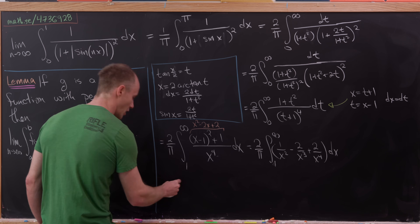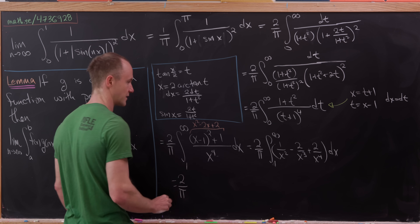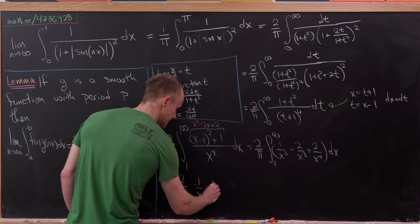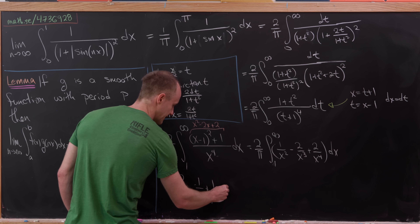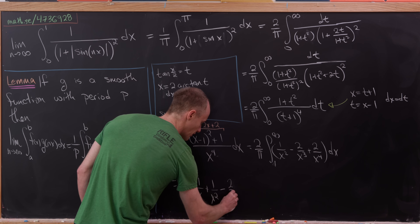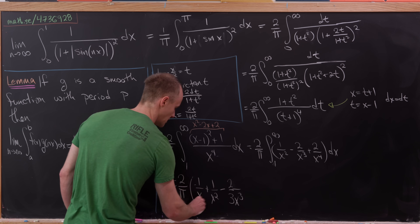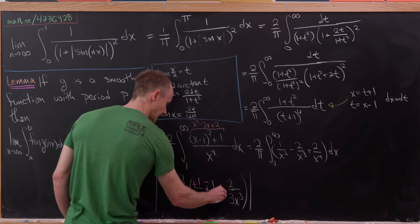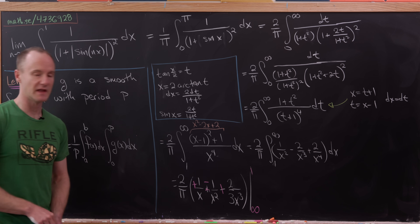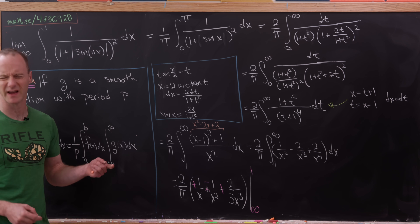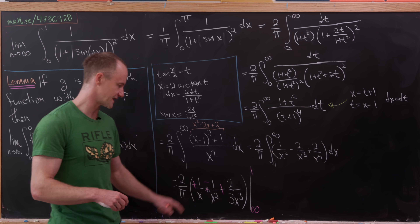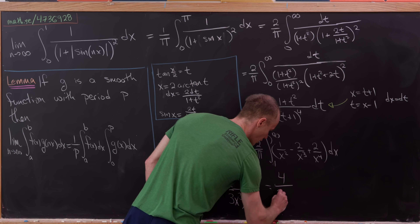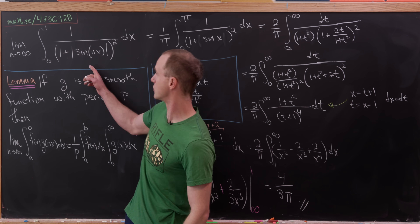Taking the antiderivative gives minus 1 over x, plus 1 over x squared, minus 2 over 3 times x cubed. Evaluating from 1 to infinity — or equivalently flipping to infinity to 1 to avoid sign issues — plugging in infinity gives 0 in all terms, and plugging in 1 gives minus 1 plus 1 minus 2 thirds. Cancelling the first two terms leaves negative 2 thirds, so flipped it's positive 2 thirds. Then 2 over pi times 2 thirds gives 4 over 3 pi. That's the final value of the limit of our integral.